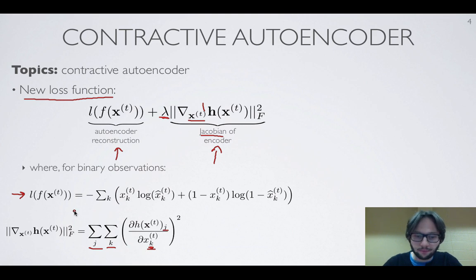So what do we have here? We have first a term which says I want the encoder to keep all the good information that's necessary for me to have a good reconstruction of the original input.